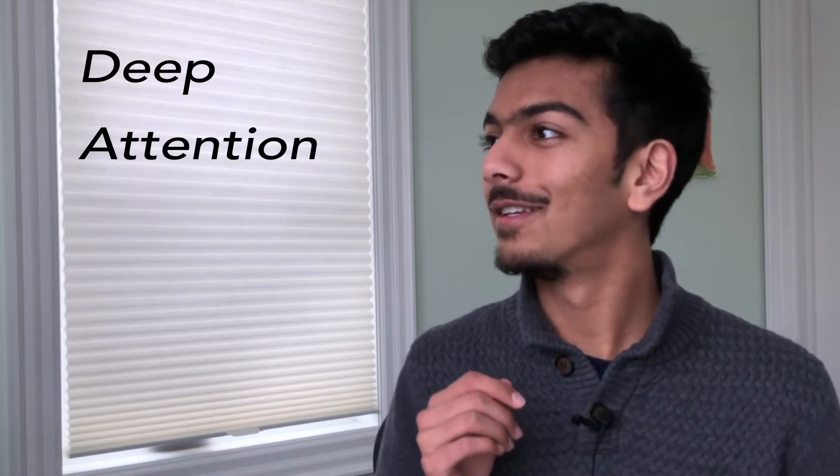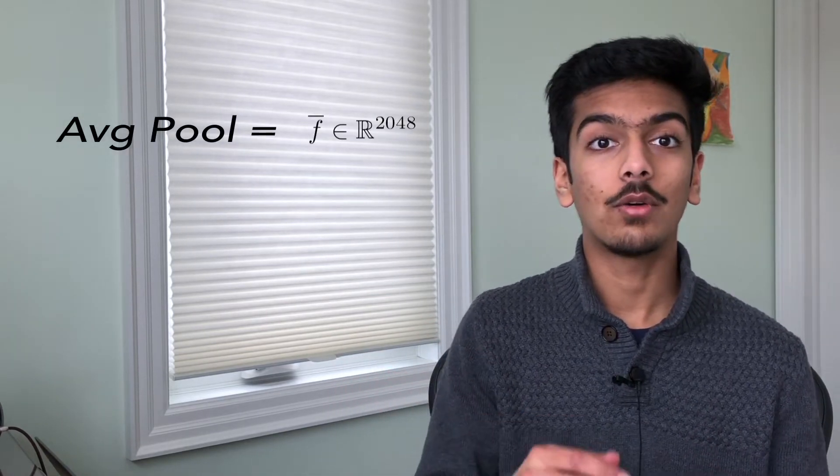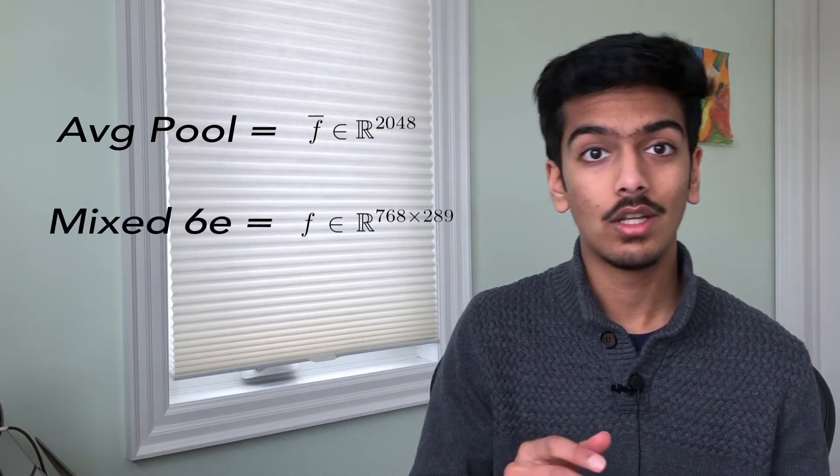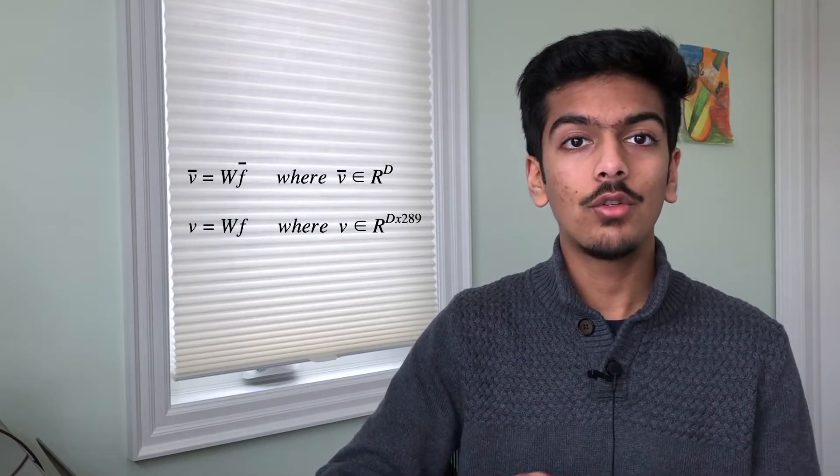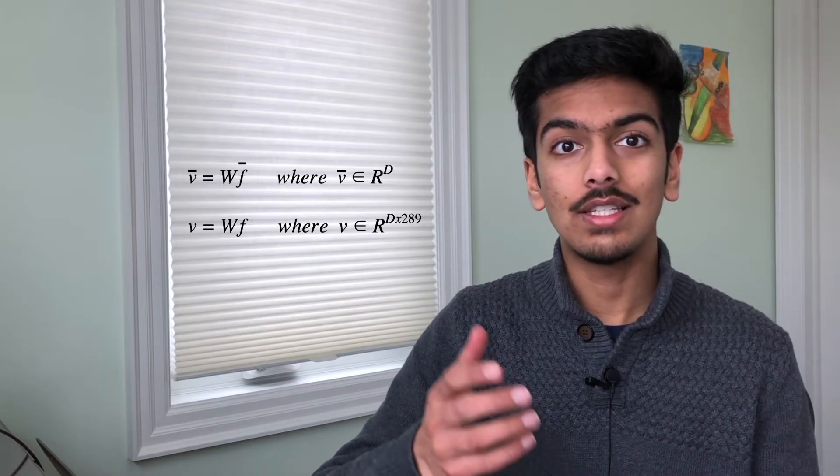the authors came up with DAMSM. Deep attention multimodal similarity model. So I'm just going to call it the DAMSM loss. In order to calculate it, we first take our image generated by the generator and pass it through an Inception V3 model. We take the output of the last average pool layer as our global image features and the output of the mixed 6E layer to get our local image features. So the local image features are the features for each sub-region. We then take our local and global image features and pass them through a perceptron layer to get them into the same dimension as our word level and sentence level embeddings.